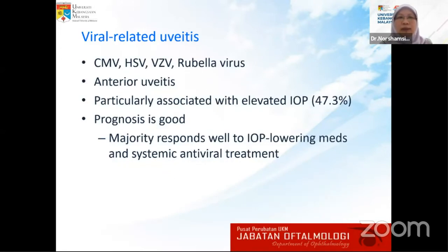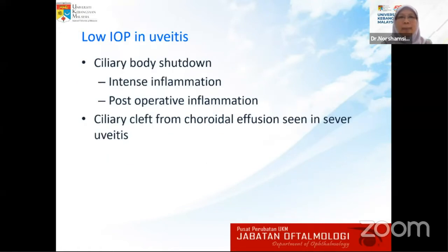Viral-related uveitis is commonly known to cause high IOP. The viruses include cytomegalovirus, herpes simplex, varicella, and rubella viruses. It normally causes anterior uveitis with granulomatous keratic precipitates, but the prognosis is generally good because the majority respond well to IOP-lowering drugs. You can also get low IOP in uveitis — either from ciliary body shutdown due to intense inflammation, post-operative inflammation, or ciliary cleft from choroidal effusion seen in severe uveitis.